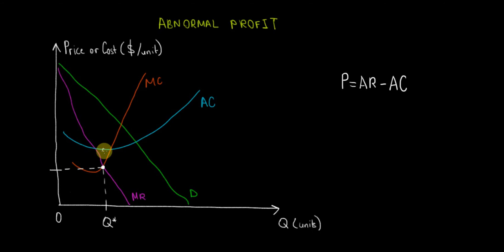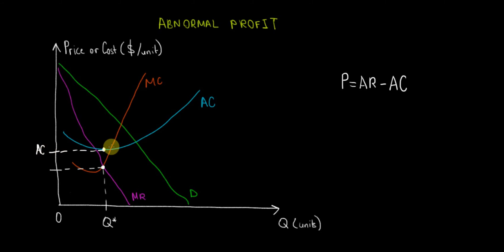The average cost curve is over here, so at this given level of output, when we go up on the blue curve, this shows us the average cost per unit. On the y-axis, which represents costs, we can identify that average cost.